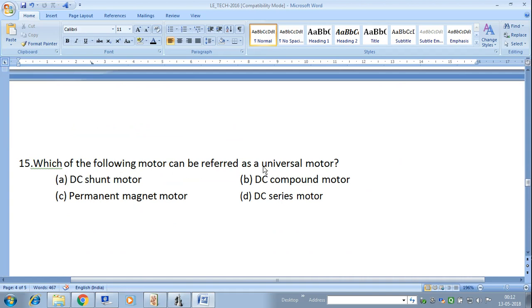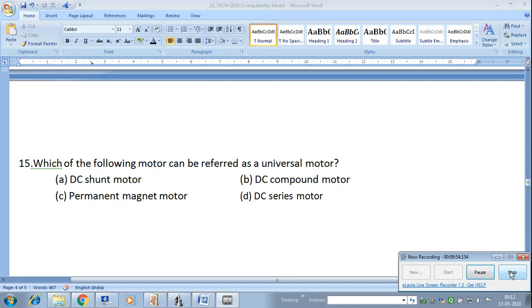Next question: Which of the following motors can be referred as universal motor? Answer is AC series motor. Practically it is AC series motor, but we can modify this AC series motor which can be operated as both AC and DC series motor. Thank you very much for watching this video.